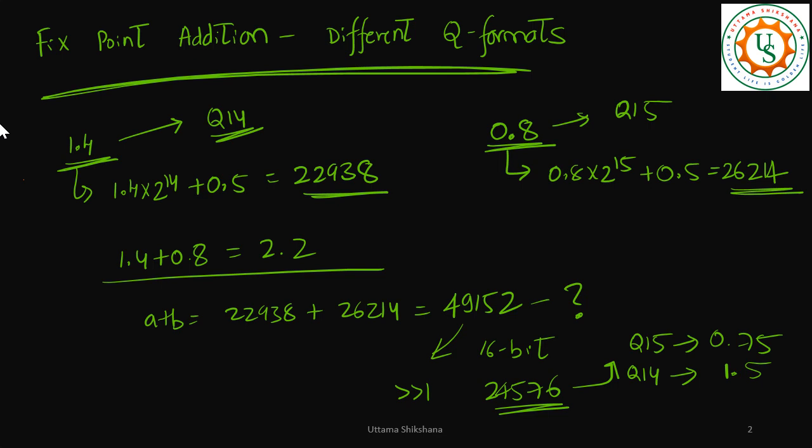But whether this will give the right answer if I take Q13 format, let me try to see. Even if I take Q13 format from here, what happens is that I'm going to get 3. I'm not getting the answer which is 2.2 in any case. So this is not the right way to actually do the fixed point addition.